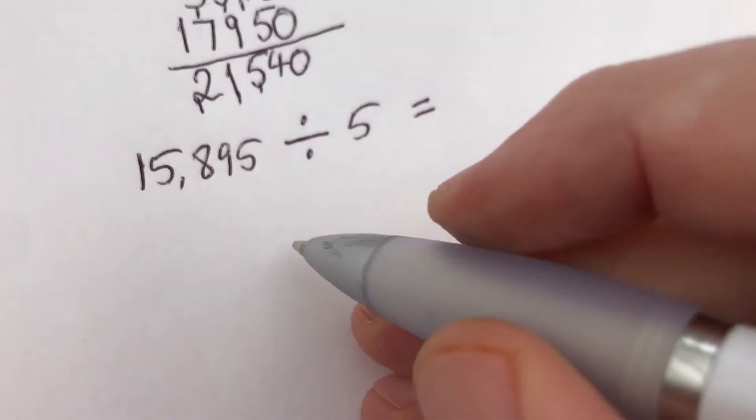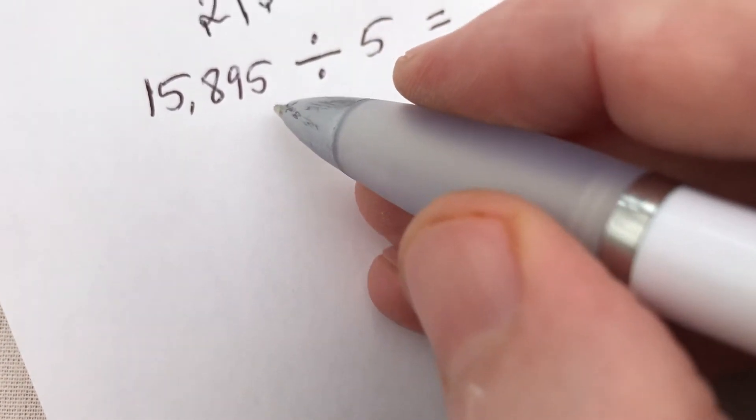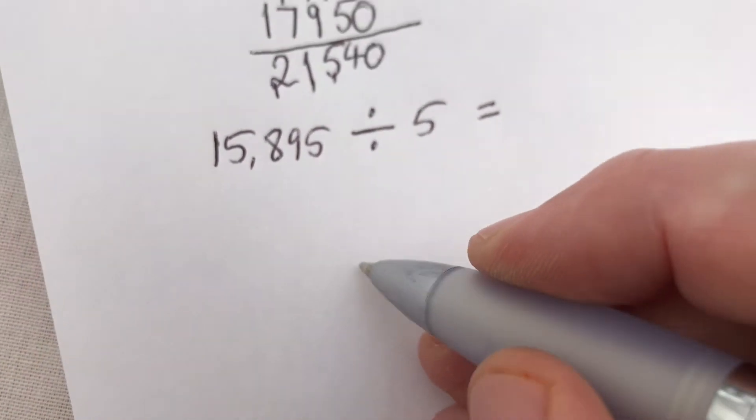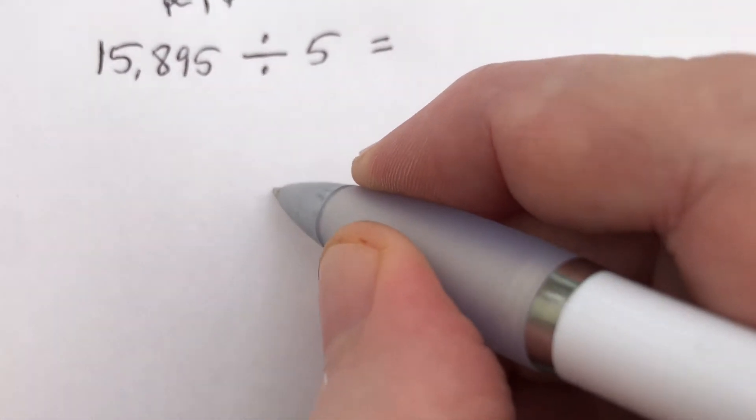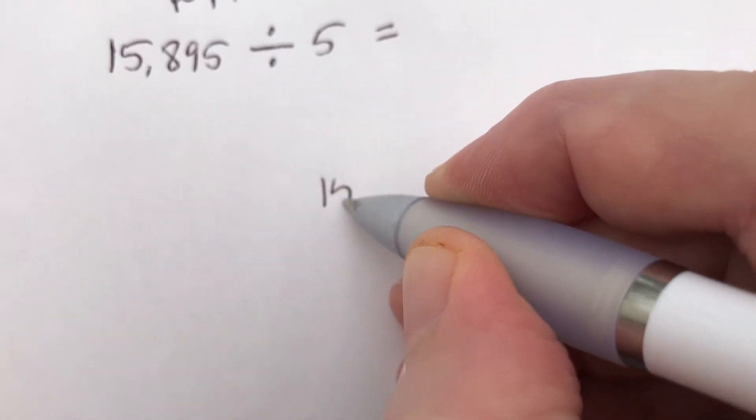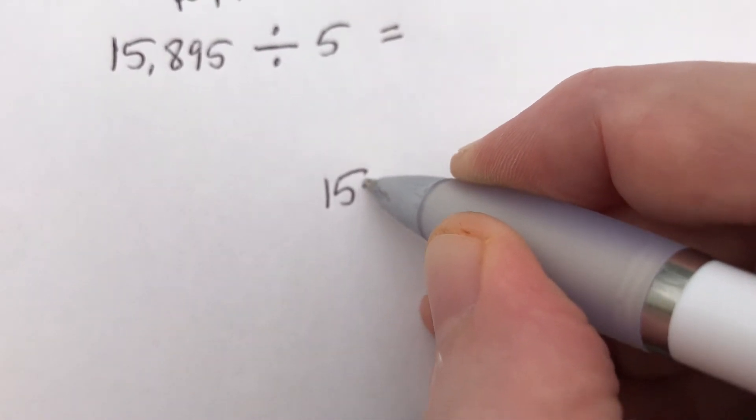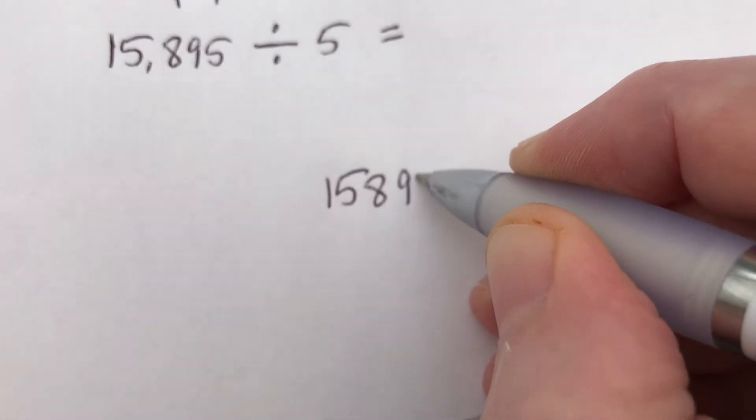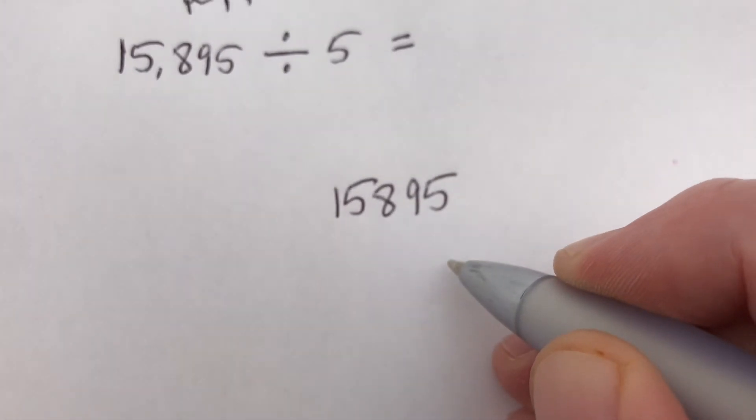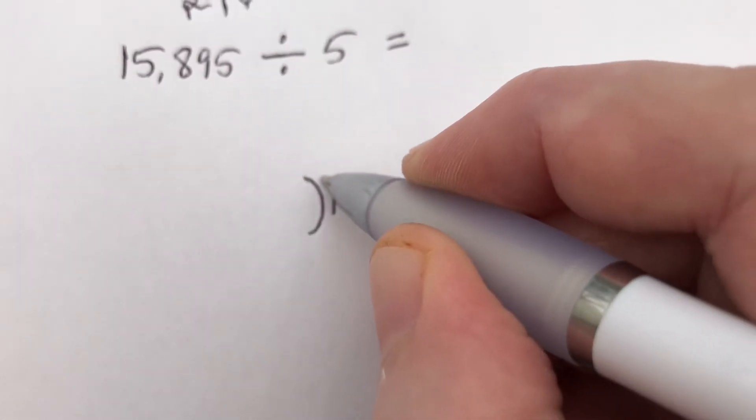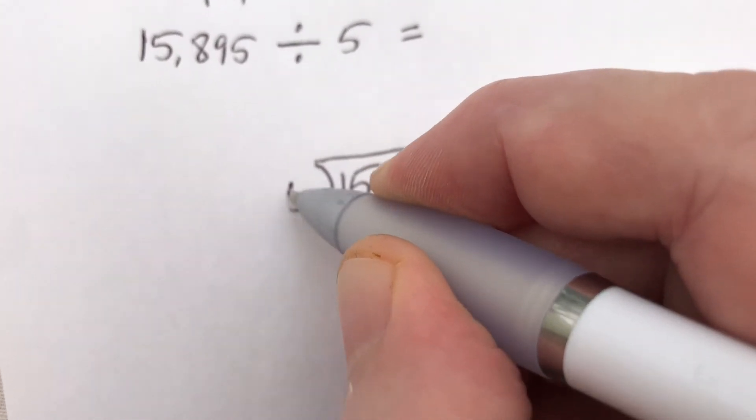And the last one for us here: 15,895 divided by 5. Slightly different for division. So what we're going to do is we'll write down the number which we want to divide up: 15,895, and we're going to divide this by 5.